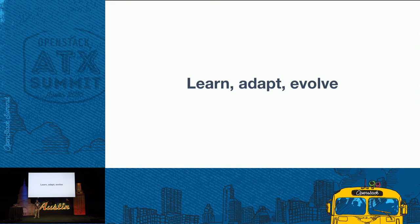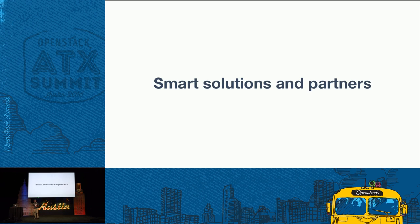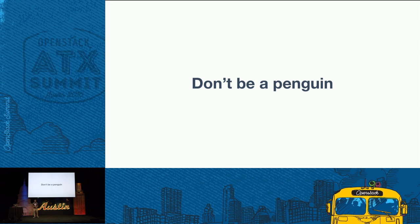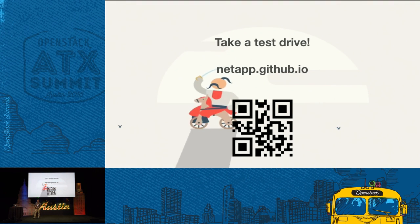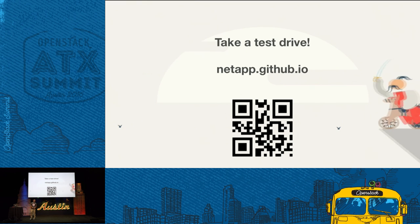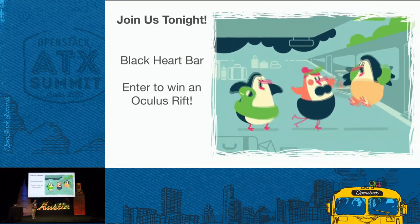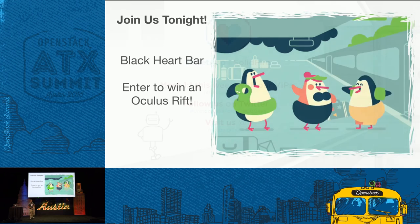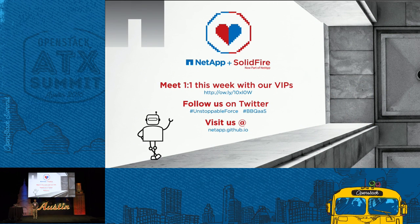Key lessons learned: make sure you learn, adapt and evolve because that's very important if you want to stay ahead of the game and stay competitive. Make sure you leverage smart solutions and partners because they increase your potential and help you reach success. And most importantly, don't be a penguin. If you liked what you saw, you can take a test drive — it's free and available on our website, netapp.github.io. Join us tonight at Stack City at the Black Heart Bar, where you can enter to win an Oculus Rift. For more details on sessions related to the topics I just talked about, grab a trifold from me or from our booth. Thank you for listening and have a great day.